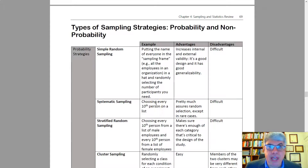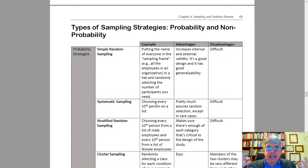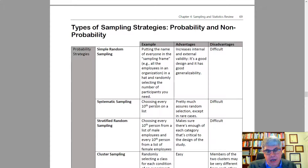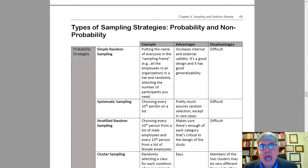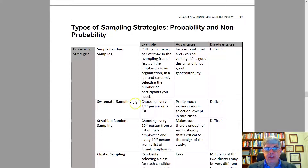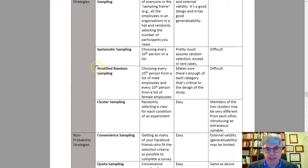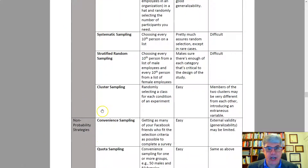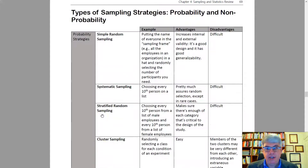Let's talk about types of sampling strategies — how are we going to go about getting a sample, getting people to participate in an experiment or fill out a survey? There are two main categories of sampling strategies: probability strategies and non-probability strategies. The probability strategies are listed at the top, and we're going to look at the non-probability strategies later.